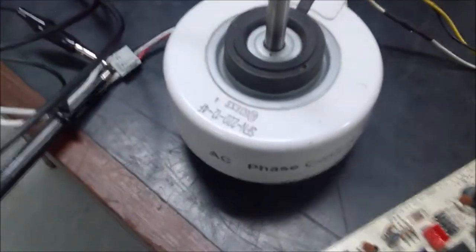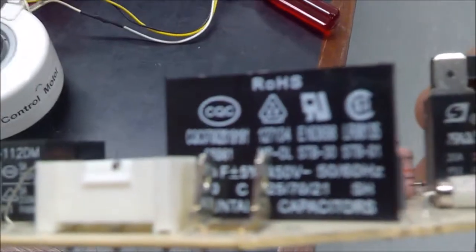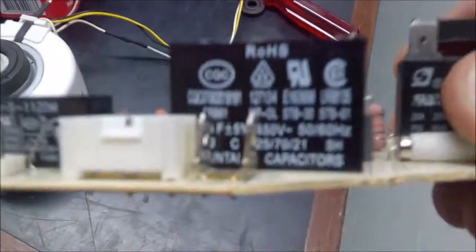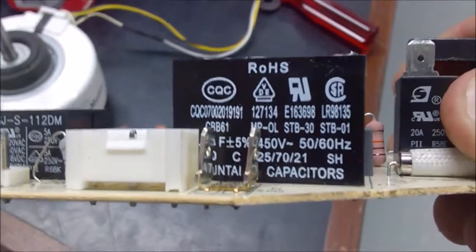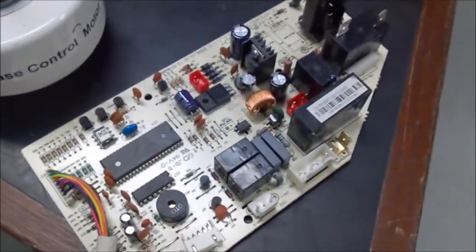The reason for that is that the run capacitor for the motor, which is typically seen on a split phase, is actually part of the circuit board. Like here it is, for instance. So this here is actually part of the capacitor circuit itself.